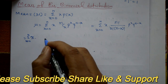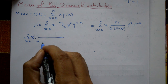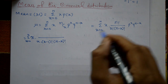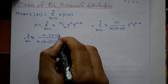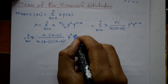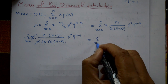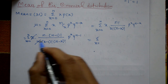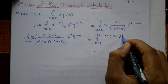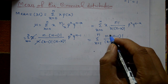Now cancel x: take x outside the factorial, which means the denominator becomes x into x minus 1 factorial, and n minus x factorial remains as it is. Also, n factorial equals n into n minus 1 factorial. After x and x cancel, the summation starts from x equals 1 to n, giving n into n minus 1 factorial divided by x minus 1 factorial and n minus x factorial.